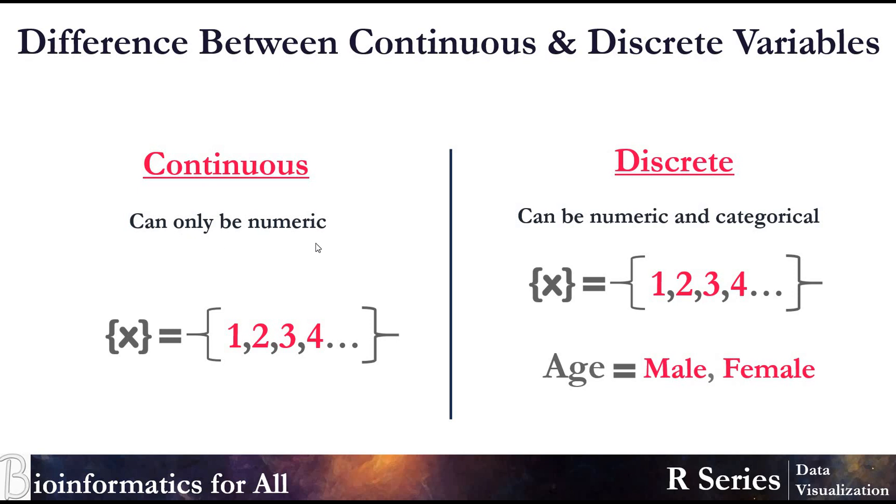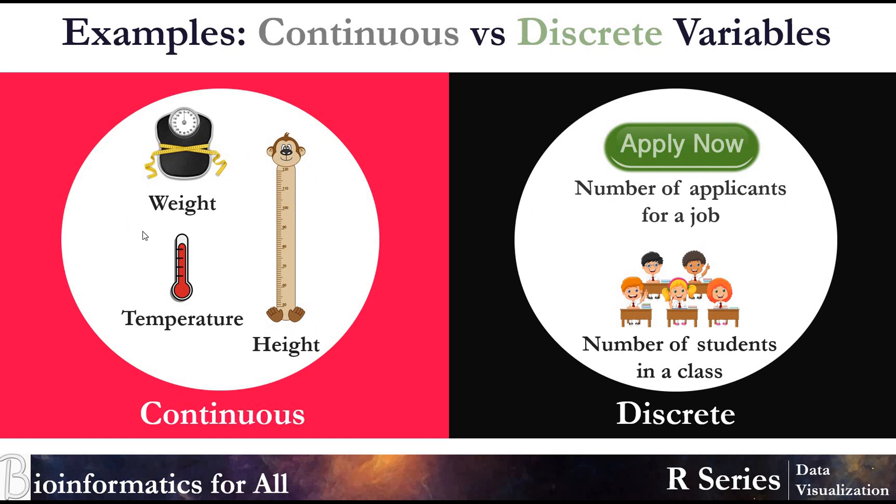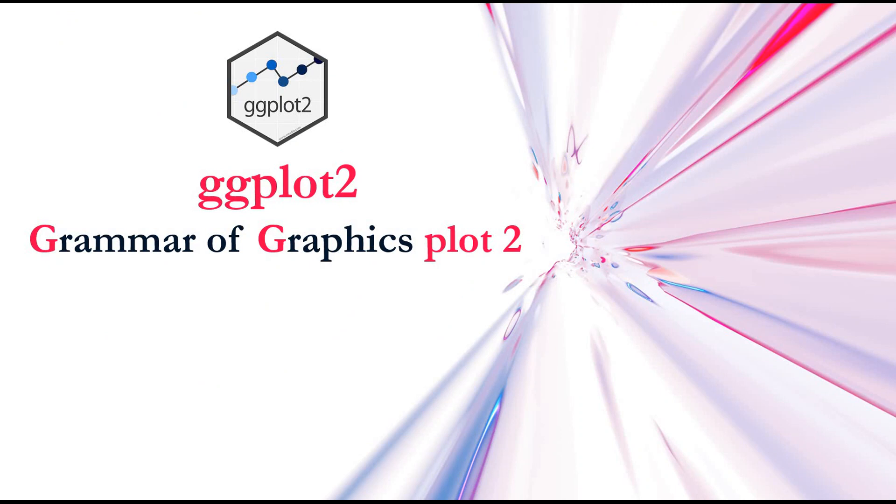Other differences: continuous variable can only be numeric, but discrete can be numeric and categorical. Examples for continuous variables can be weight, temperature, height. For example in temperature we can have 37.5, 37.6, 37.57, and it goes on. For discrete variables, examples can be the number of applicants for a job - it can either be 10 or 11 or 12, it can't be 1.2 or 1.5 - and the number of students in a class.